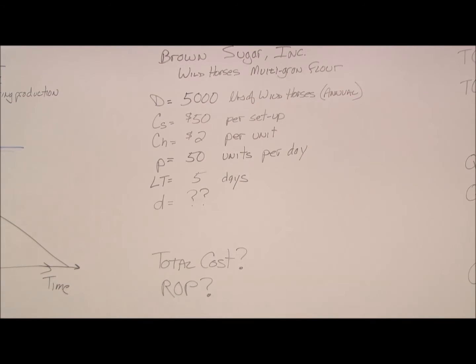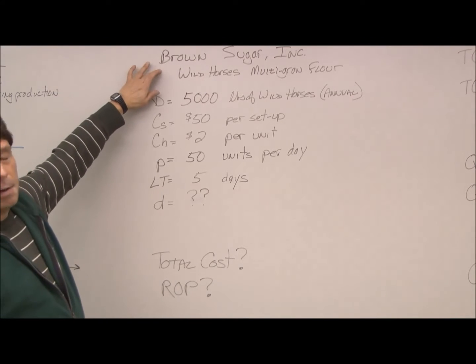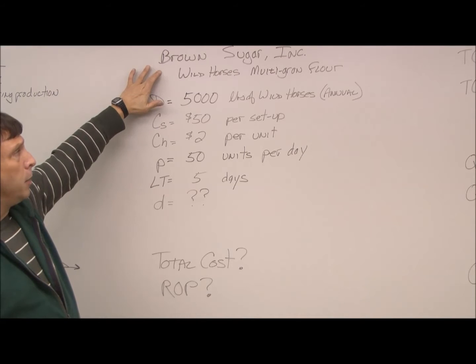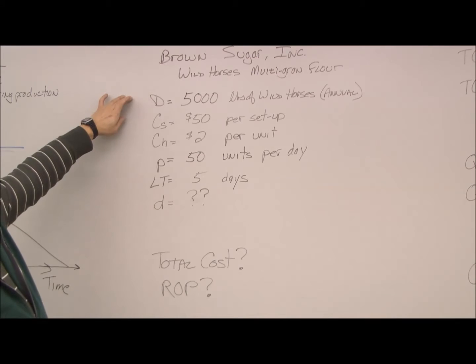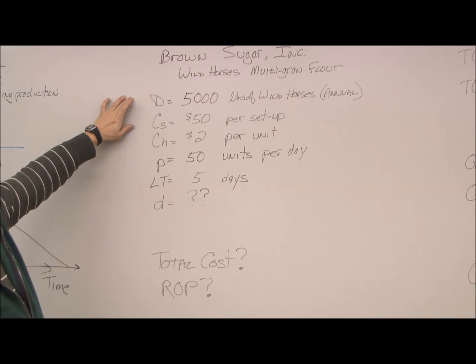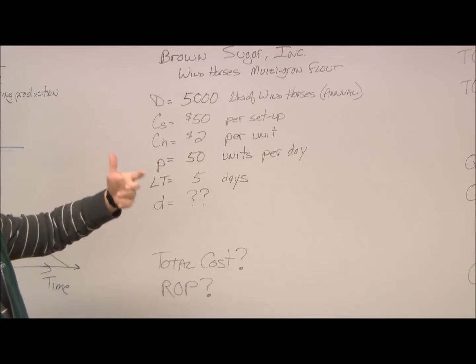From the problem that was given, we're going to look at our company, Brown Sugar, Inc. And they're making a product we'll call Wild Horses Multi-Grain Flour. From the write-up, we know our annual demand is 5,000 pounds or 5,000 one-pound bags of Wild Horses Multi-Grain Flour, and that's annual, meaning yearly.